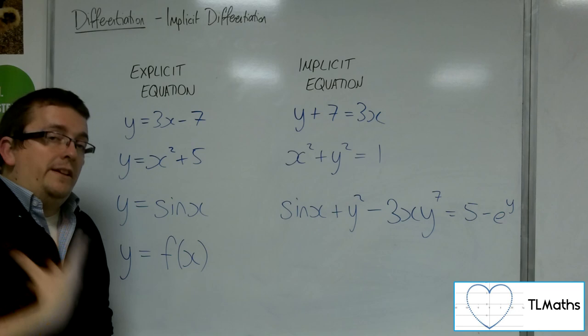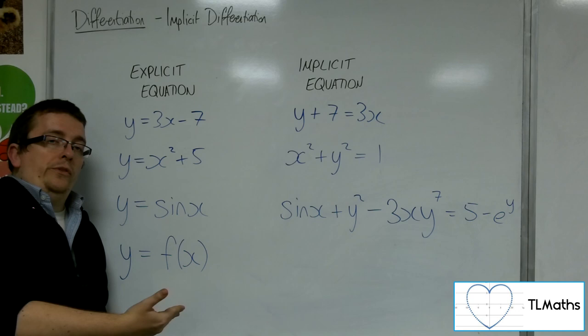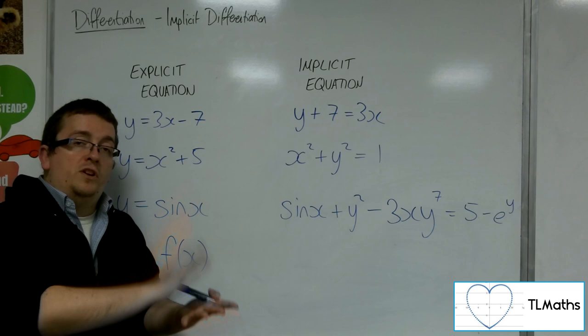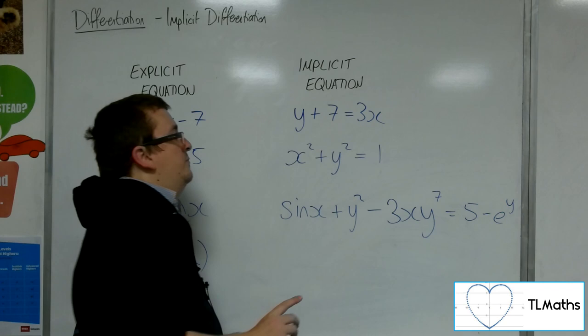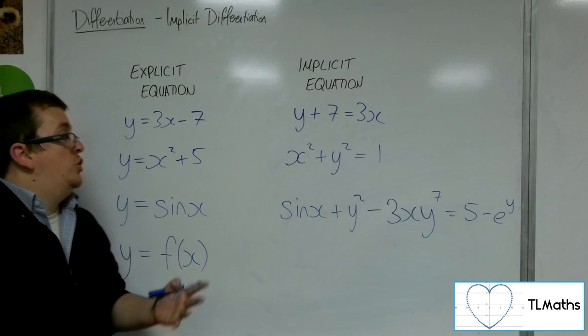In all the times that we've differentiated, we've always started off with a y equals some function of x to differentiate. Regardless of whether we've been doing basic differentiation, chain rule, product or quotient rule, any of that, it's all been with explicit equations. So the question is, can I differentiate an implicit equation without having to rearrange it into explicit form first?